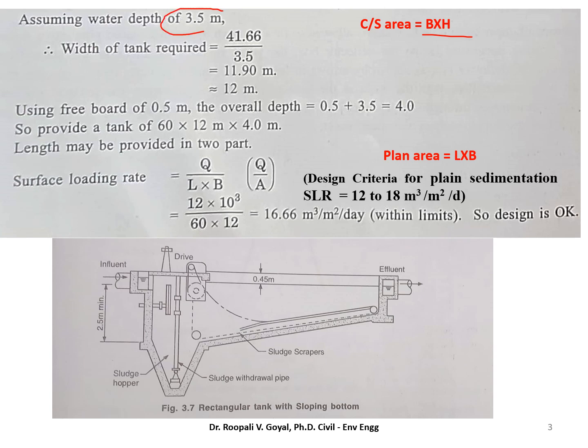So we assume water depth is 3.5 meter. So this cross sectional area divided by depth, it will give you your width of the tank. That is 11.9, and we are assuming it is 12 meter. Now we are using 0.5 meter as freeboard. So we assume total depth is 4 meter.